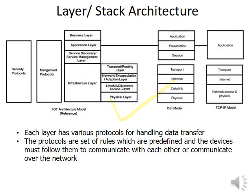Each layer has various protocols for handling data transfer. A protocol is a set of predefined rules that devices must follow to communicate with each other over the network. In the figure you can see the TCP/IP model, the OSI model, and the IoT layer stack architecture. The infrastructure layer consists of a physical layer, link/MAC/network access layer, network encapsulation/adaptation layer, and transport/routing layer.